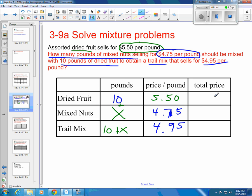Then we want to work across to find total prices. Total prices are kind of the key to solving this. If it's 10 pounds at $5.50 per pound, we're going to take the 10 times our $5.50. We're multiplying here to equal this third column. Our X pounds of mixed nuts times our price per pound is going to be 4.75X.